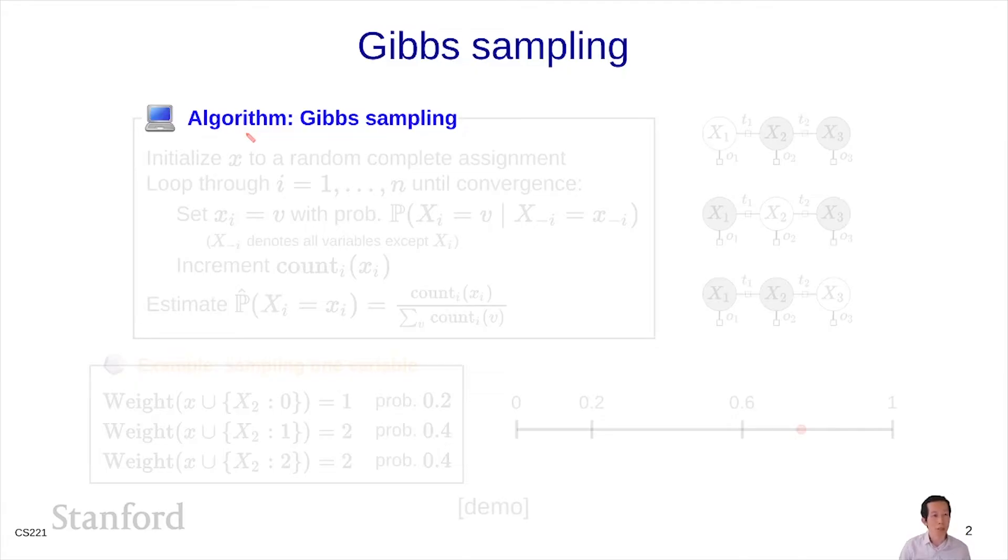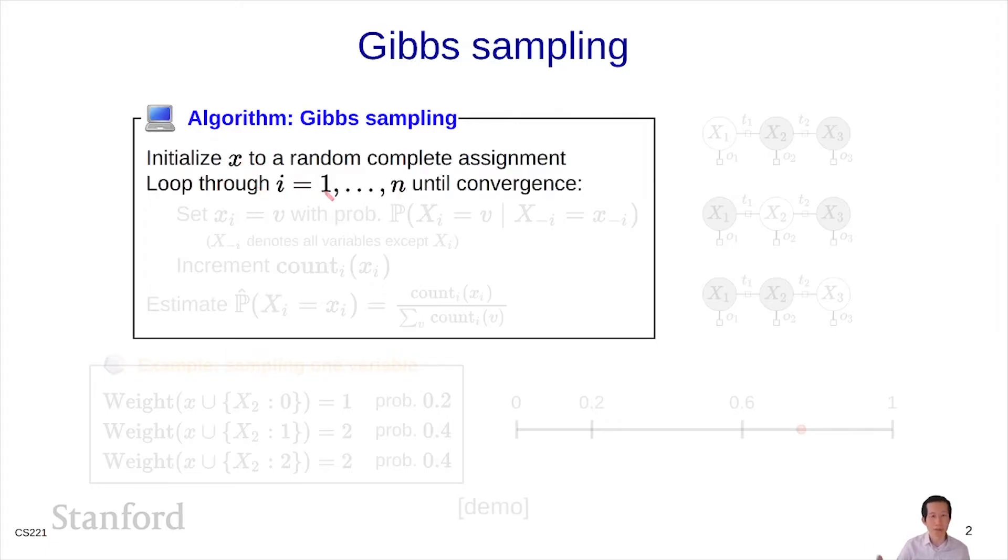Let's present the algorithm now. We're going to initialize the assignment to some completely random assignment. Then we're going to loop through each of the variables until convergence. We're going to set the assignment xi equals v with this probability, the probability of xi equals v given x minus i equals x minus i. This x minus i notation just refers to all the variables except for xi.